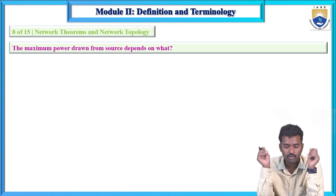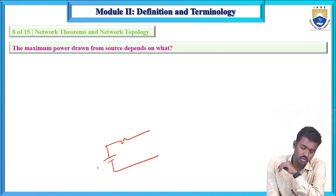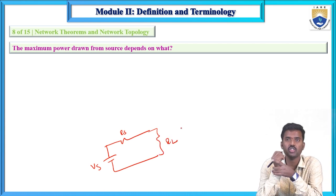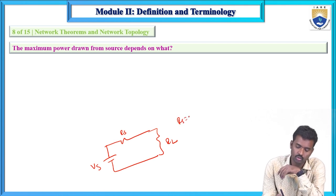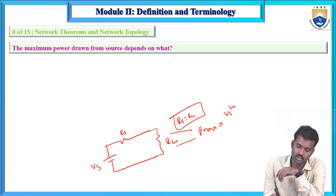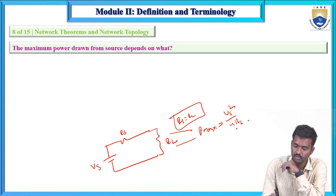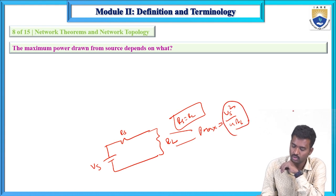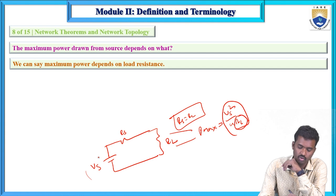Eighth question: What does maximum power drawn from a source depend on? Here the circuit has source VS, source resistance RS, and load resistance RL. The maximum power transfer theorem states that when load resistance equals source resistance (RS = RL), maximum power is transferred to the load. The maximum power P_max equals VS² / 4RL. So maximum power drawn depends on the load resistance and the source voltage value.